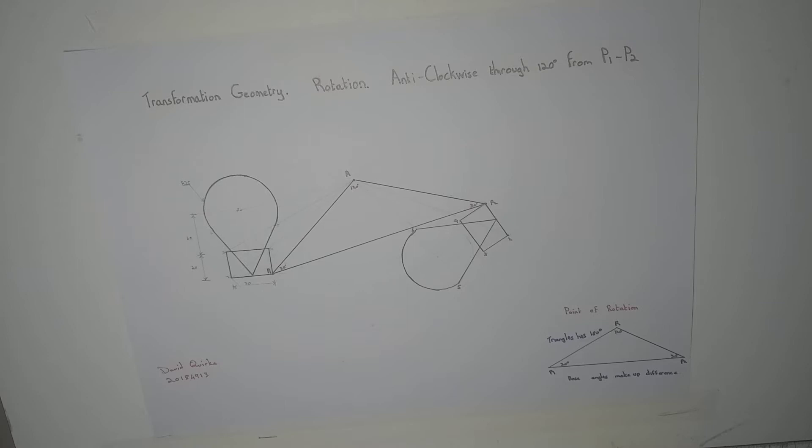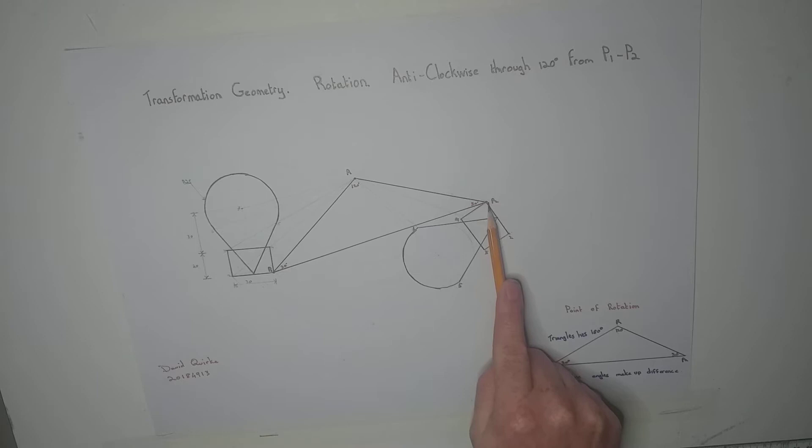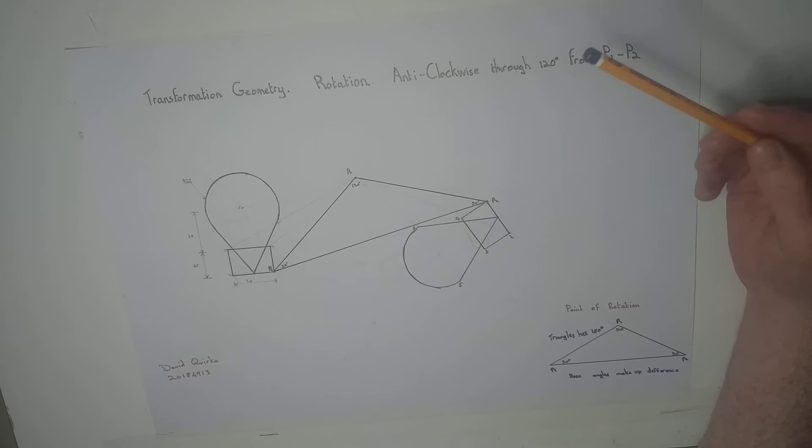First, join P1 and P2 together. Then, the angle you want to rotate at is 120 degrees. As you see down here, every triangle has 180 degrees.